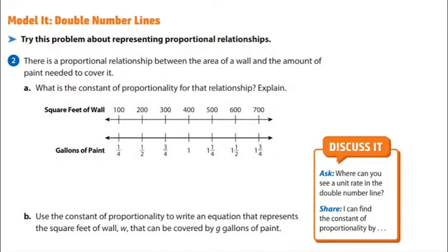We're now in the 'Model It' section. The first way to model a proportional relationship is with a data table; the second way is with double number lines. I'd like you to think about parts A and B: try to come up with the constant of proportionality and the equation that represents square feet of wall by gallons, using the double number lines.